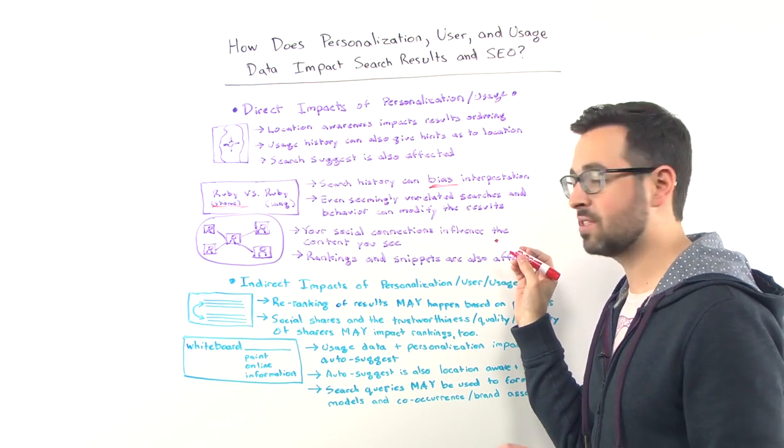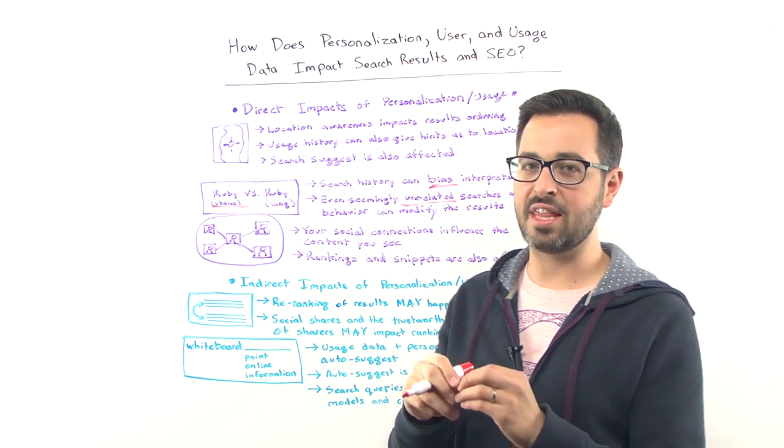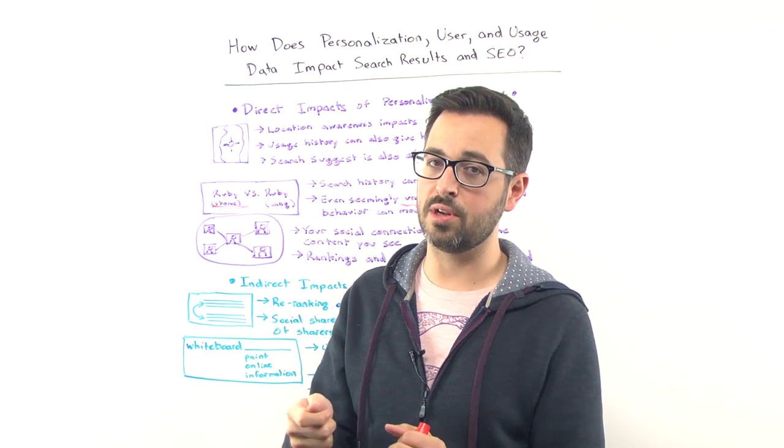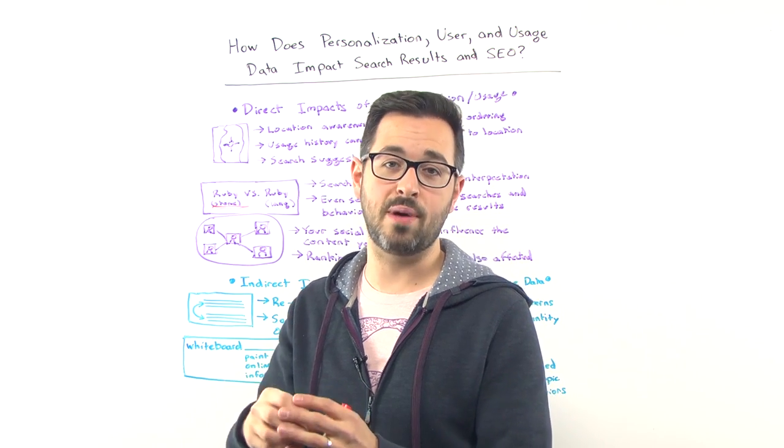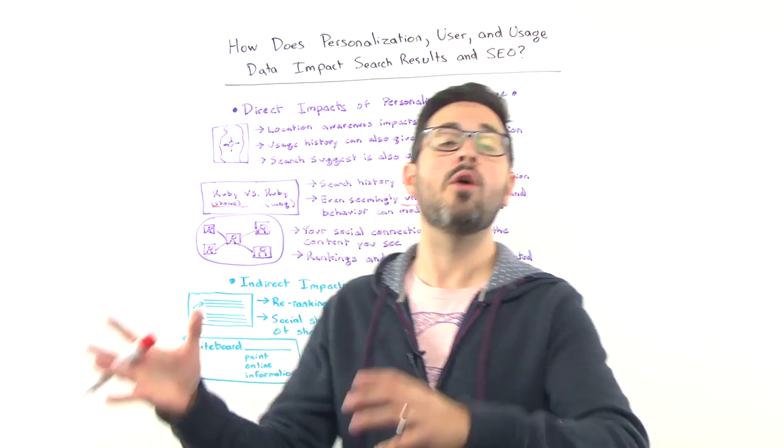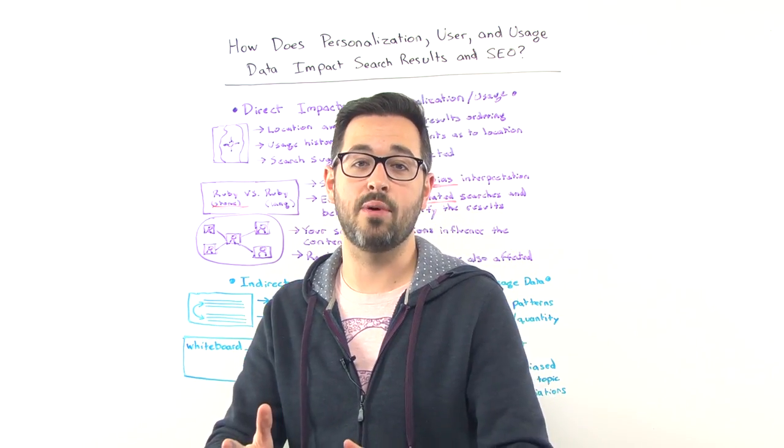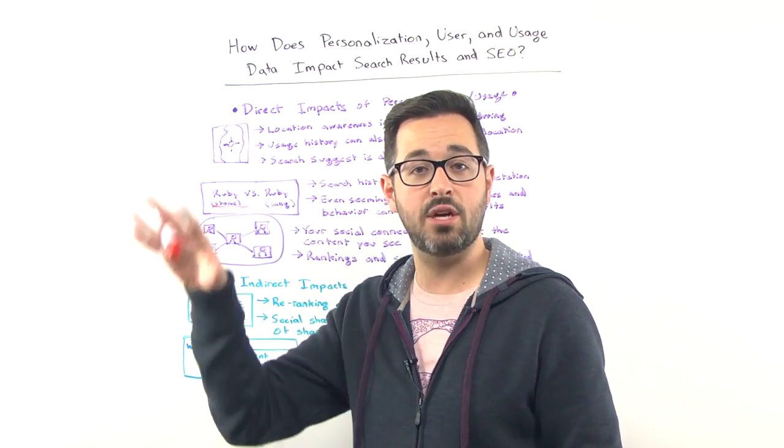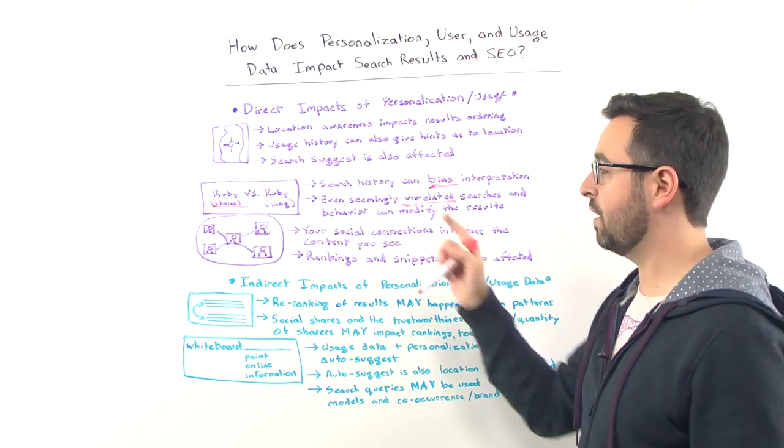So even seemingly unrelated searches, and this gets very interesting, even seemingly unrelated searches and behavior can modify the results. And I think this is Google showing their strength in pattern matching and machine learning. So they essentially have interpreted, for example, as disparate things as me performing searches around the SEO world and them interpreting that to mean I'm a technical person. And therefore, as I do searches related to Ruby or Python, they don't think the snake or the gem, the gemstone, they think the programming language Python or the programming language Ruby, which is pretty interesting. Connecting up what's essentially a marketing discipline, SEO, a technical marketing discipline, and connecting up those programming languages. Very interesting. So that can modify your results as well.